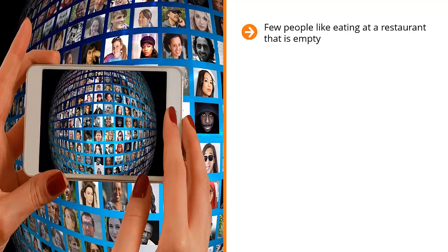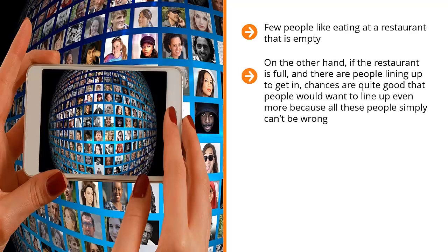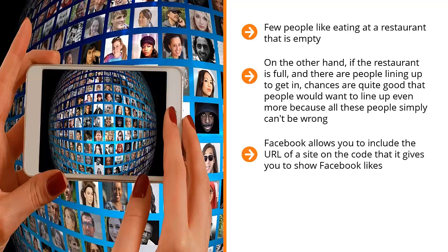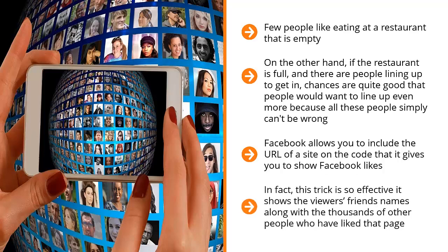This is called social proof. Few people like eating at an empty restaurant — at the back of their mind they think the food must not be very good. But if the restaurant is full with people lining up, chances are others want to line up too, because all those people simply can't be wrong. You can use that psychology to boost your squeeze page conversion rate by embedding Facebook's like code onto your squeeze page. Facebook allows you to include a URL so the code shows likes from the biggest brand in your niche. This trick even shows viewers' friends' names alongside thousands of other people who liked that page — piggyback on this social proof to give the viewer the push they need to sign up.